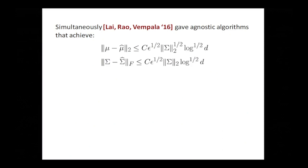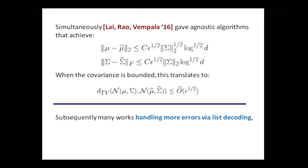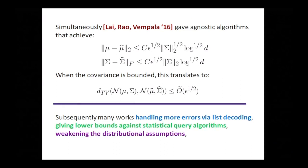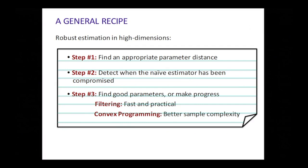Around the same time, Lai, Rao, and Vempala gave also agnostic learning algorithms measuring parameter distance, getting roughly sqrt(epsilon) error and almost entirely removing the dependence on d except for a small sqrt(log d) factor. There have been many more works since: tolerating larger fractions of errors outputting a list of hypotheses, showing lower bounds against efficient algorithms through statistical queries, weakening distributional assumptions, handling sparsity, and working with more complicated generative models like independent component analysis.